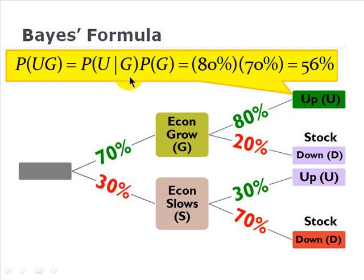And it's in fact equal to this, the conditional probability of U given G, which is right here, 80 percent, multiplied by the probability, the unconditional probability, the economy growing. That's the 70 percent here.